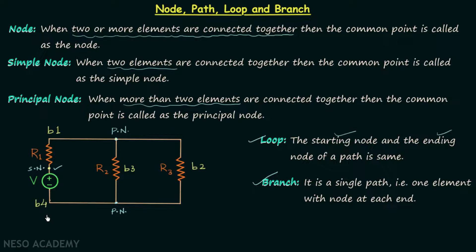There is one important point: if several elements in a network carry the same current, they can also be referred to as a single branch. For example, the same current I1 flows through both R1 and the voltage source V in that path, so we can consider them as forming a single branch even though two different elements are present. Applying this rule gives us three branches instead of four.